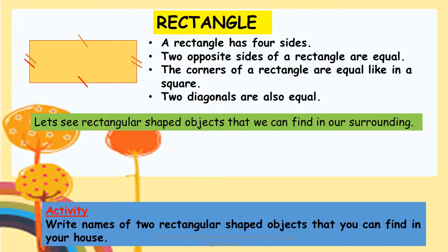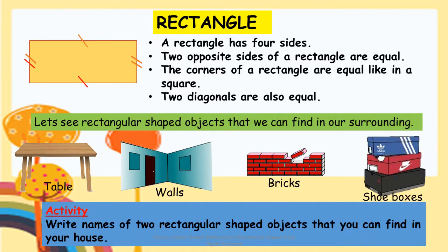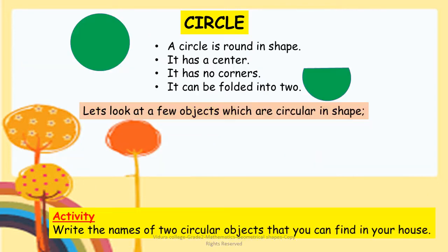Now, let's see rectangular-shaped objects that we can find in our surroundings: tables, walls, bricks, and shoe boxes. Activity: write the names of two rectangular-shaped objects that you can find in your house.